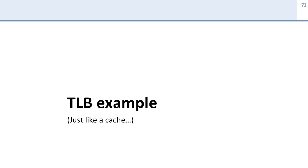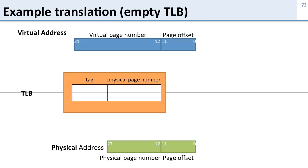Let's take a look at an example of how the TLB works. If you've seen caches, you'll remember that this looks an awful lot like a cache. Here's our setup: we've got our virtual address, a page offset, and a virtual page number. We're going to use our TLB, which has a tag and a physical page number, to translate the virtual page into a physical page and give us our physical address.